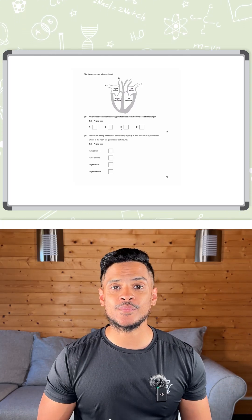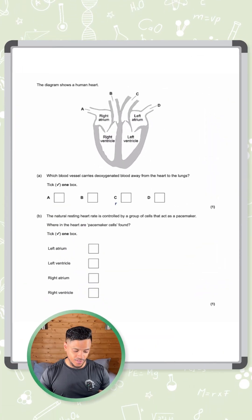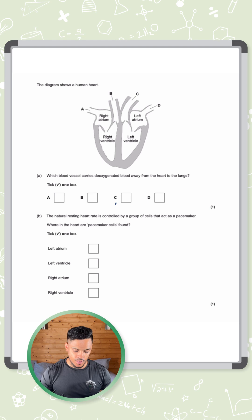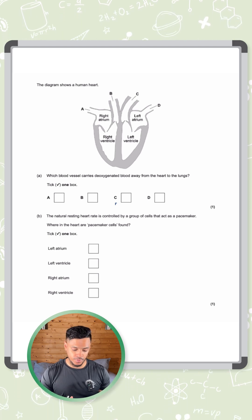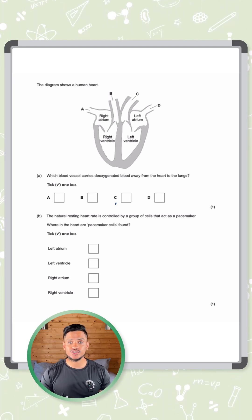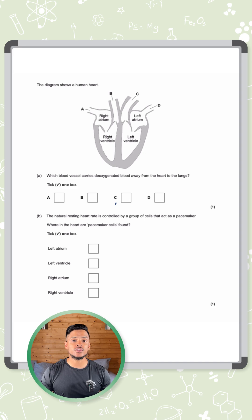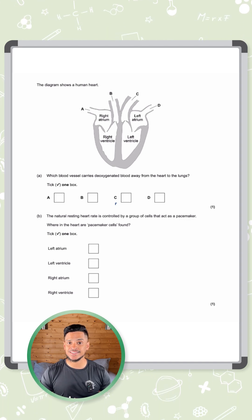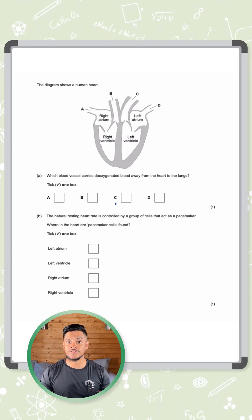Alright guys, what we have here is a diagram of the heart, and the question is asking which blood vessel carries deoxygenated blood away from the heart to the lungs. To do this, it'll be useful to know the route that blood takes in the heart, and from there you can figure it out.